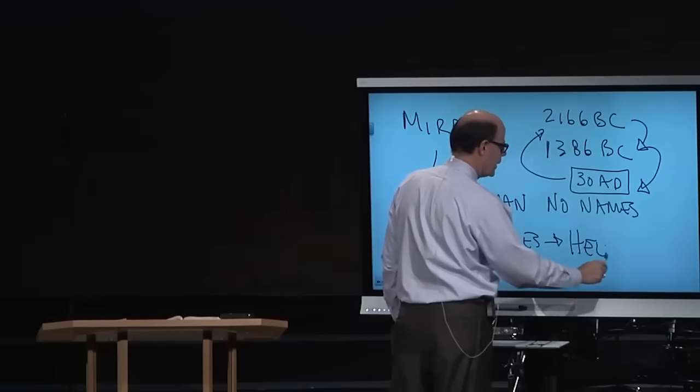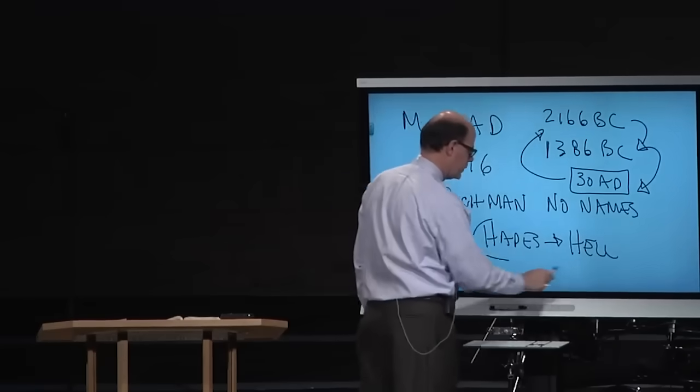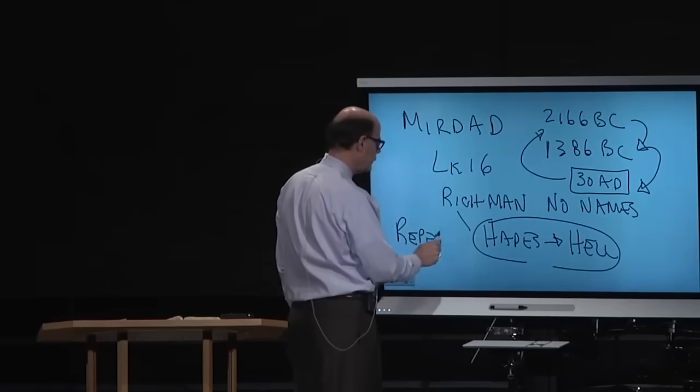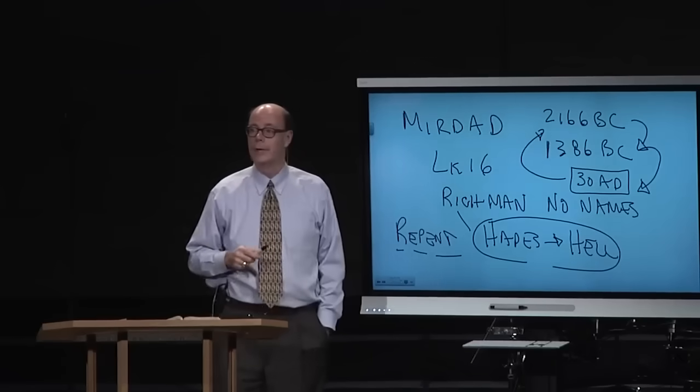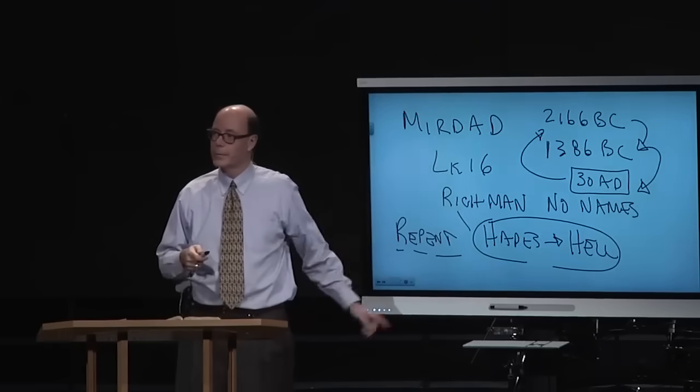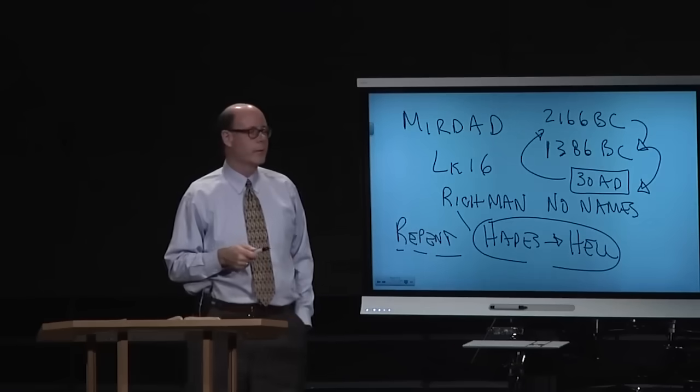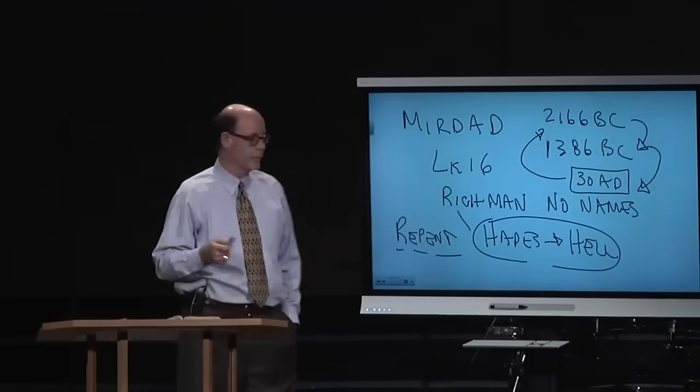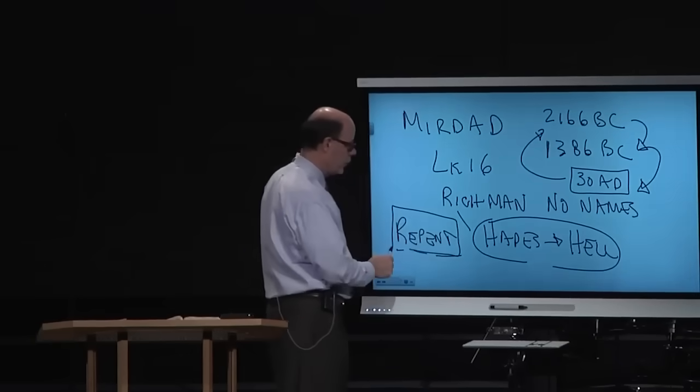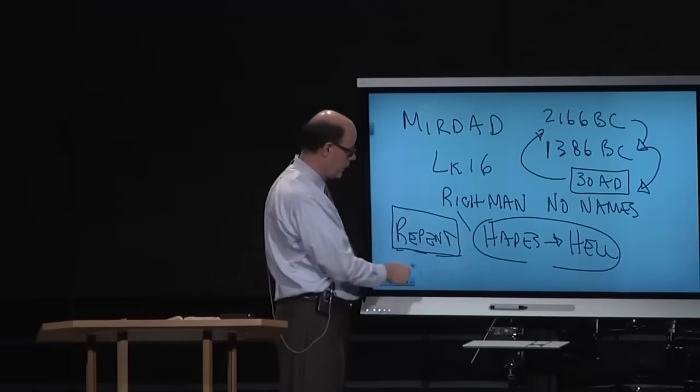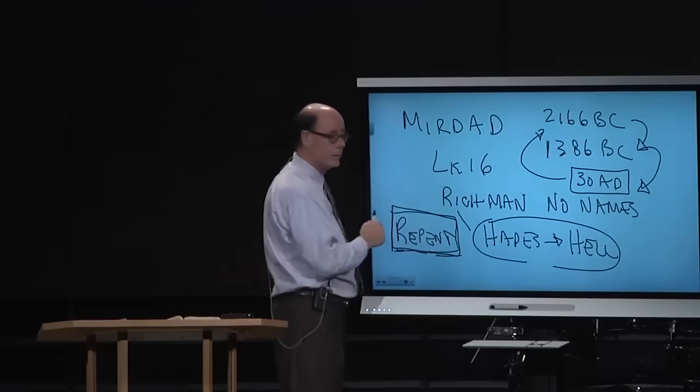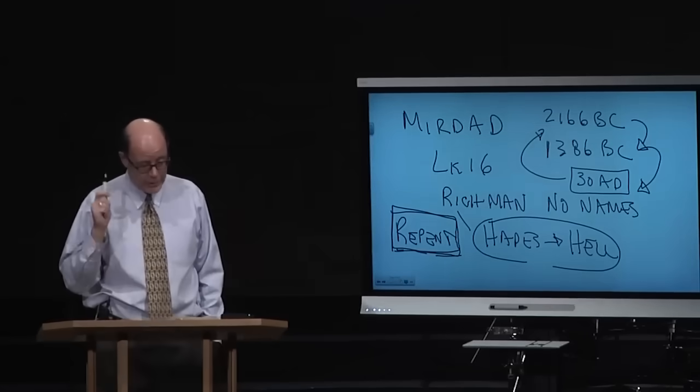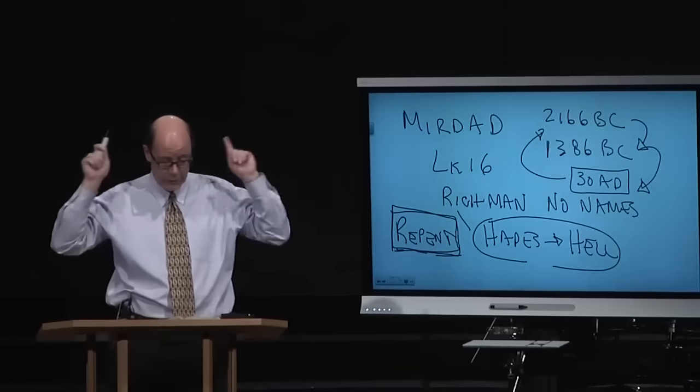Verse 30: repent. The rich man down there in Hades, headed to hell, said the only way to escape this is to repent. Now isn't that interesting? There are actually Christians that don't like that word. Actually, there's a theologian that says repentance is an unbiblical addition to the doctrine of salvation. He actually says that in the Ryrie Study Bible. You know what someone that's there said? The only way you keep from getting there is repenting.